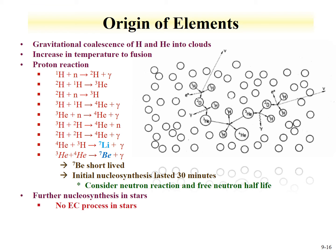After the Big Bang, hydrogen and helium gravitationally coalesce into clouds. Once dense enough, temperatures increase to fusion temperatures. A list of reactions occurs: protons plus neutrons going to deuterium, then helium-3, and so on, peaking at helium-4 reactions where a lot of energy from fusion is released. Going above helium we make lithium or beryllium, but these were relatively short-lived and unstable. The initial nucleosynthesis lasted on the order of 30 minutes, and free neutrons with a half-life of about 10 minutes decayed and were no longer available for reactions.